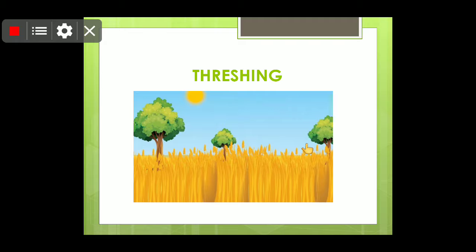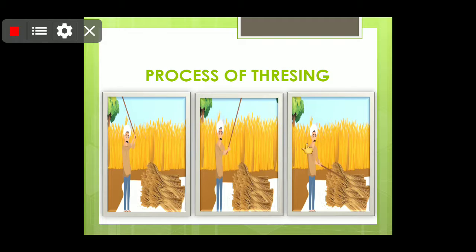Now the second method is threshing. Here you can see a beautiful farm with almost fully dried crops ready to harvest. After harvesting, the farmer collects the stalks and makes bundles. You can see by the pointer that the longer portion is the stalk, and the grains are at the top portion.